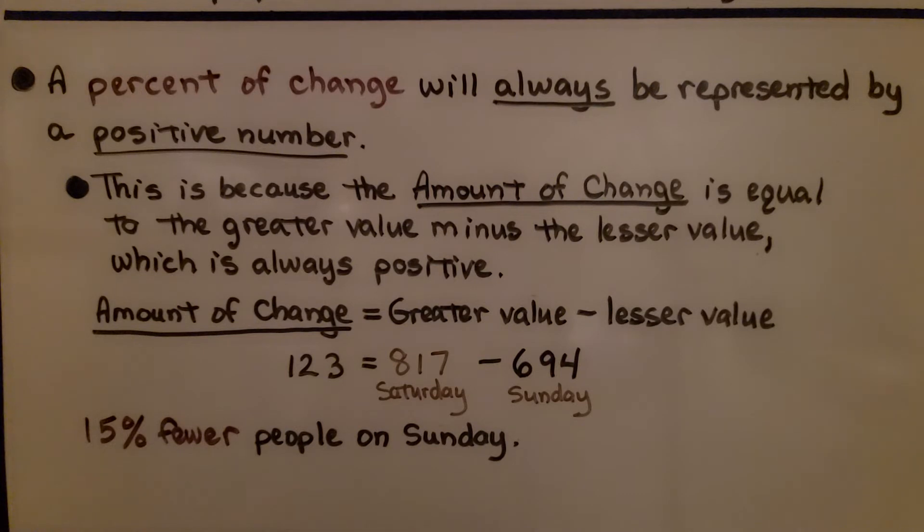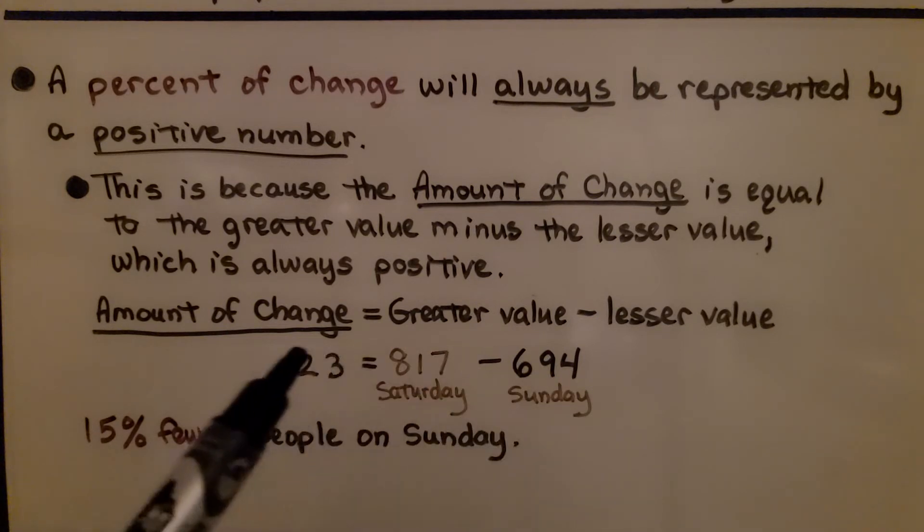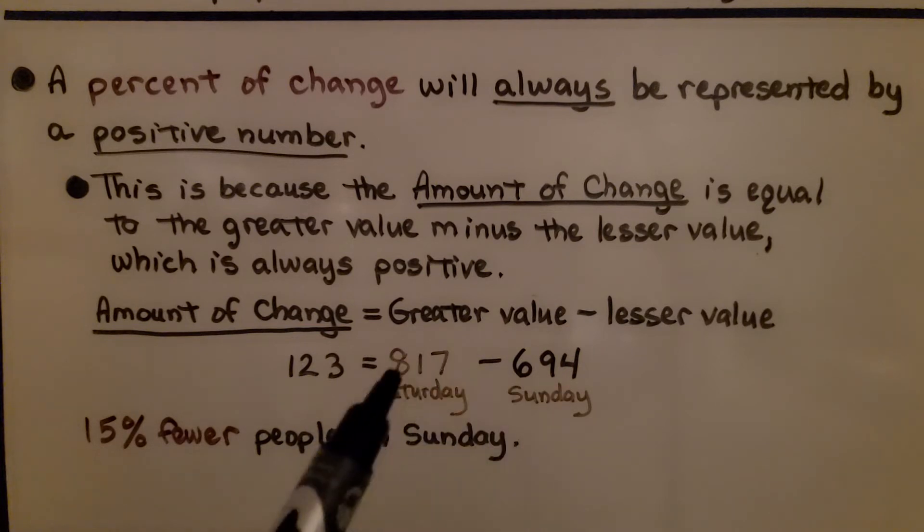A percent of change will always be represented by a positive number. This is because the amount of change equals the greater value minus the lesser value, which is always positive. We knew that 817 people went to the museum on Saturday. We found the new amount was 694. We subtract that, and 123 people was the amount of change between Saturday and Sunday. It's a positive amount. 15% fewer people came on Sunday.